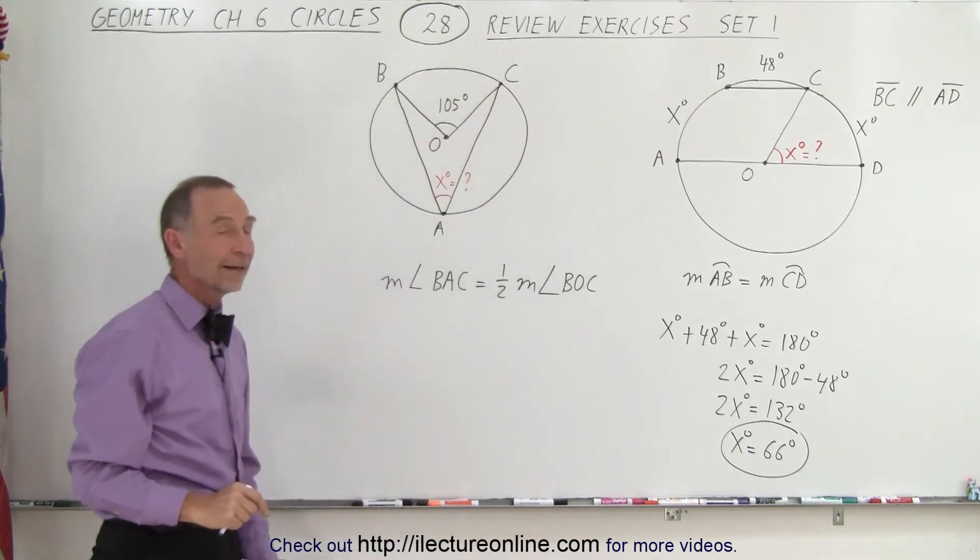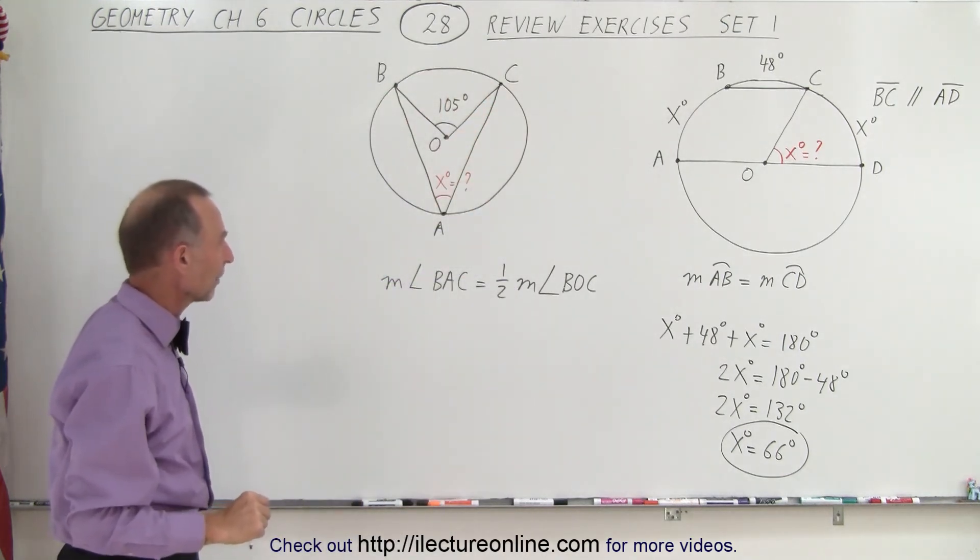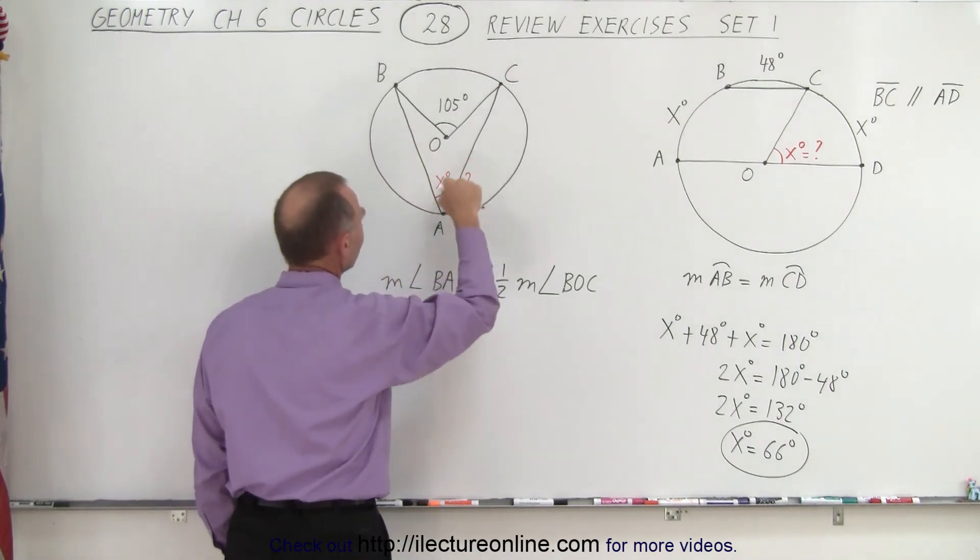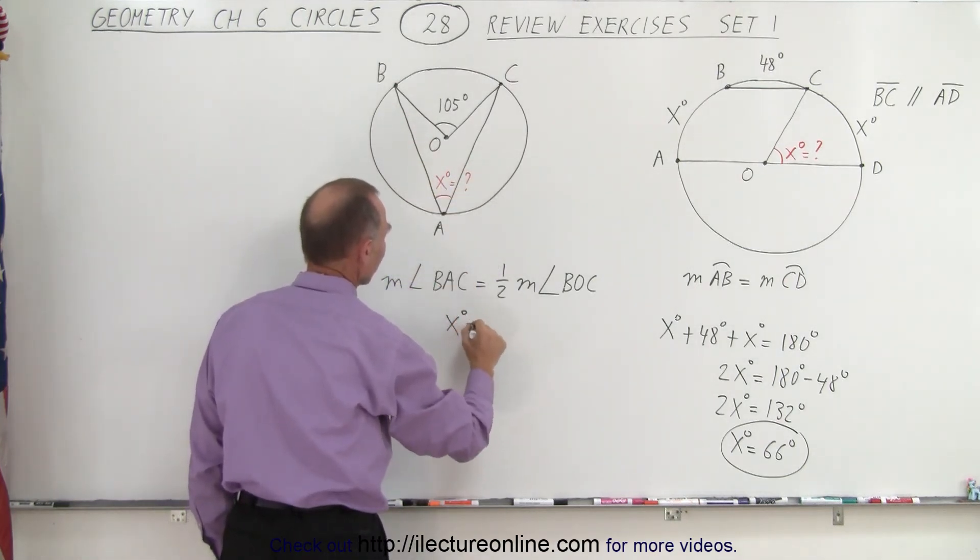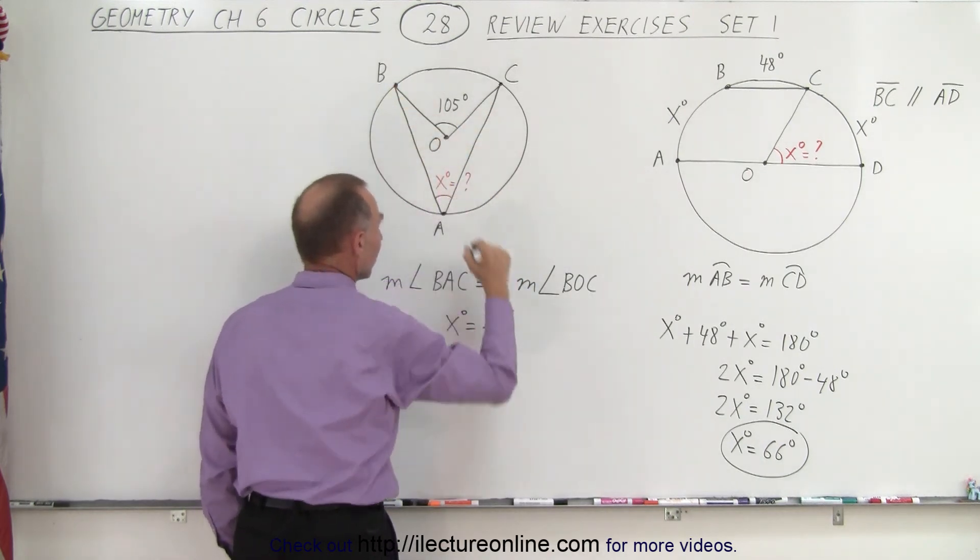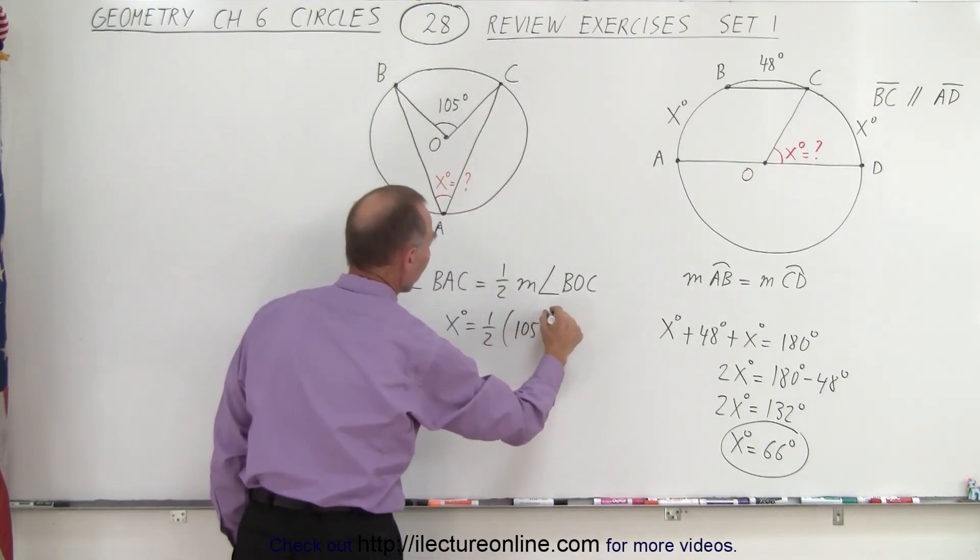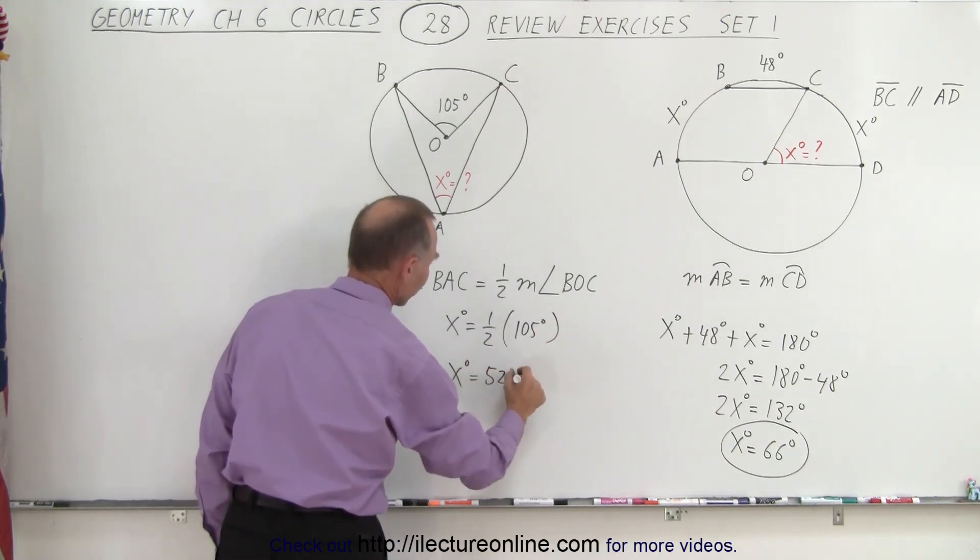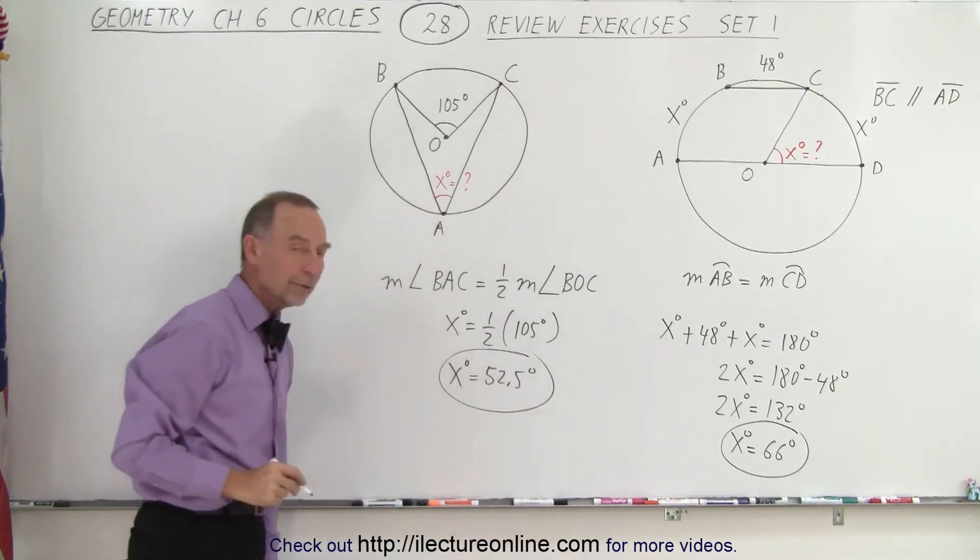Therefore we know we can say that the measure from B to A to C is equal to X degrees, that must equal one-half times the measure from B to O to C, which is 105 degrees. Which means that X degrees must equal 52.5 degrees, and there you go, that is how we find the solution to those two.